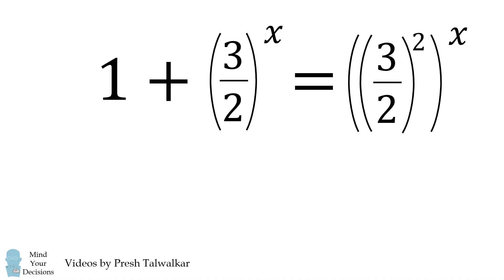We now simplify 3 over 2 squared all raised to the power of x. This becomes 3 over 2 all raised to the power of 2x. Now make the substitution that 3 over 2 raised to the power of x is equal to u. If we square both sides of the equation, we get 3 over 2 all raised to the power of 2x is equal to u squared.